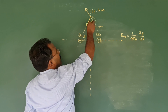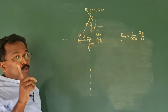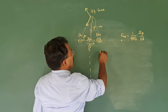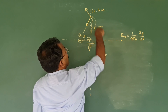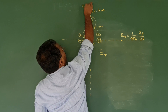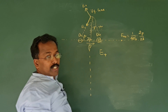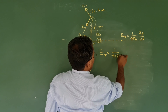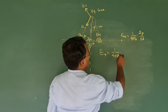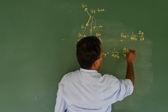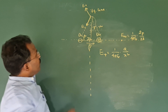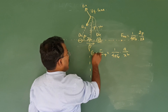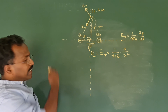Now you have two electric fields. Their magnitudes will be the same because they are at the same distance. E plus, the electric field here — this is the E plus direction, this is the E minus direction. E plus is equal to 1 by 4 pi epsilon 0 into Q divided by x square. And since E minus is also at the same distance, this is equal to E minus also.